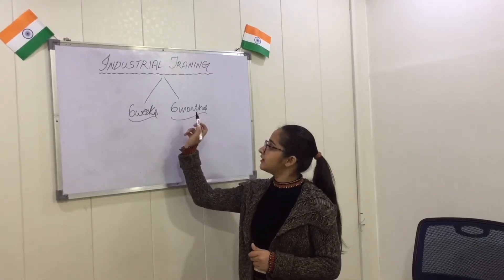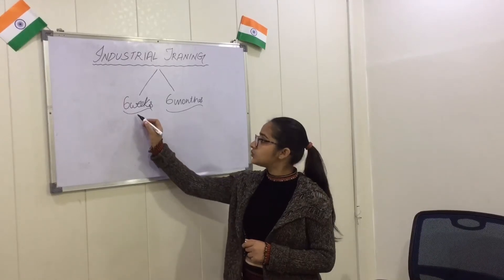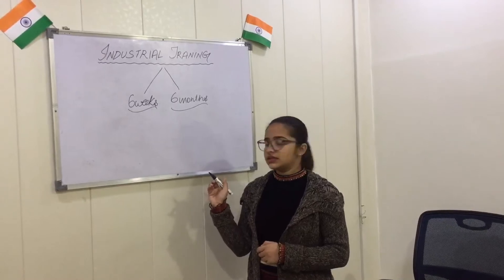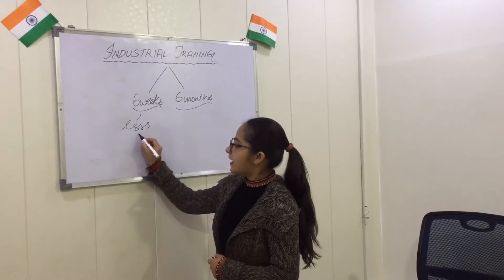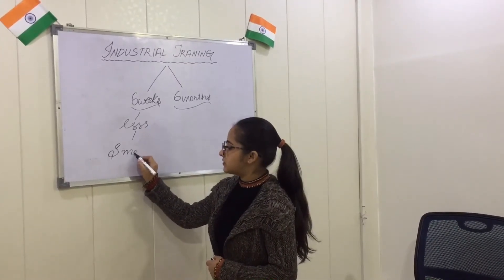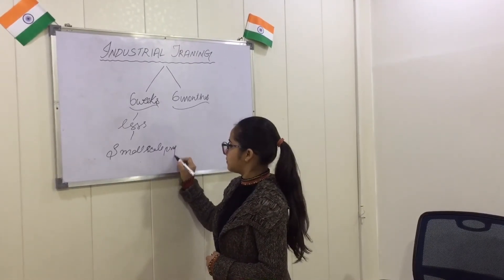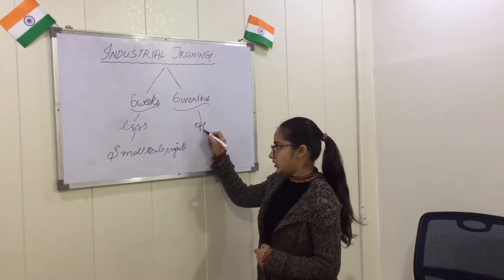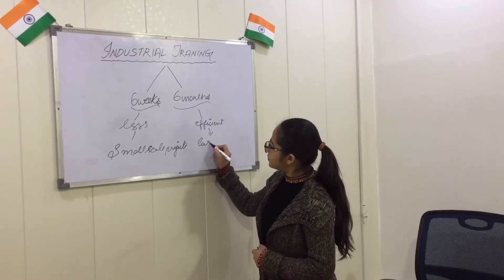Industrial Training can be conducted in two types: 6 weeks training and 6 months training. They are both different in their fields. In 6 weeks training, the time is less and we can only develop small scale projects. Whereas in 6 months training, the time is sufficient and we can develop large scale projects.